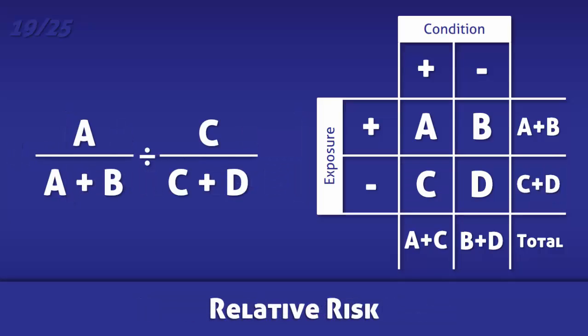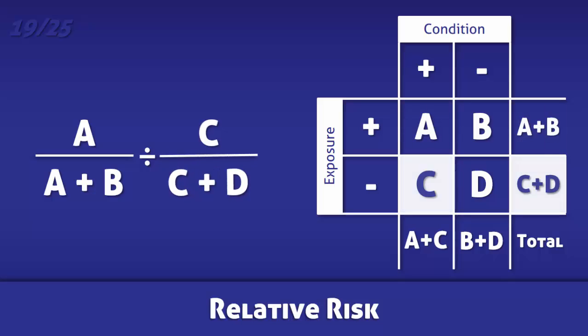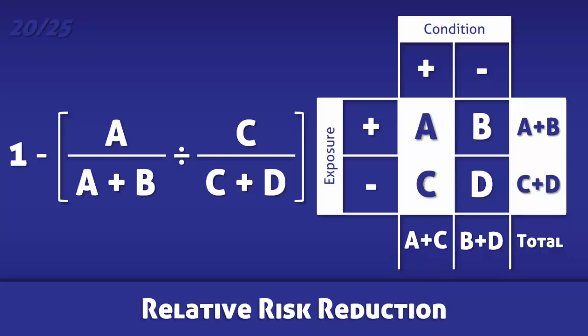For relative risk, divide the incidence of the condition in individuals who are exposed to a risk factor by the incidence of the condition in individuals who are not. For relative risk reduction, subtract 1 by the relative risk.